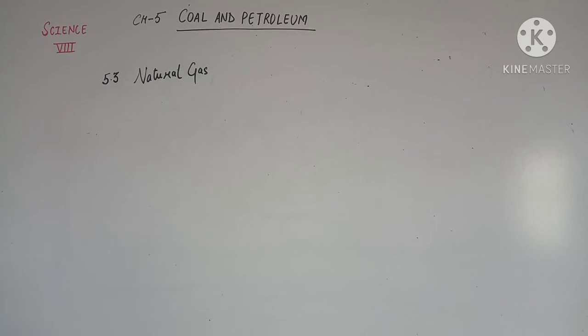Natural gas has been found in Tripura, Rajasthan, Maharashtra and in Krishna Godavari Delta. Moving forward to section 5.4, some natural resources are limited. You have studied in the beginning of the chapter that some natural resources are exhaustible like fossil fuels, forests, minerals etc.